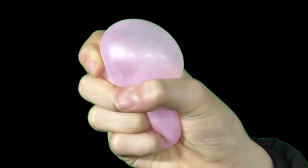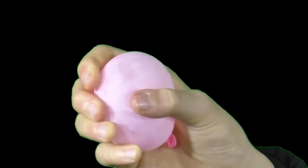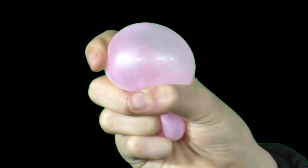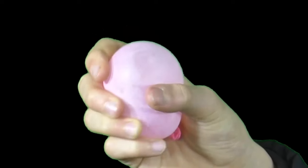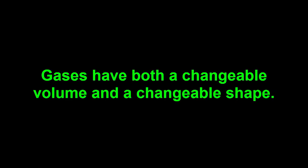Because they also have a changeable shape, they can flow and take the shape of the container they're in. Here we're changing the shape of air inside a balloon. Easy! Gases have both a changeable volume and a changeable shape.